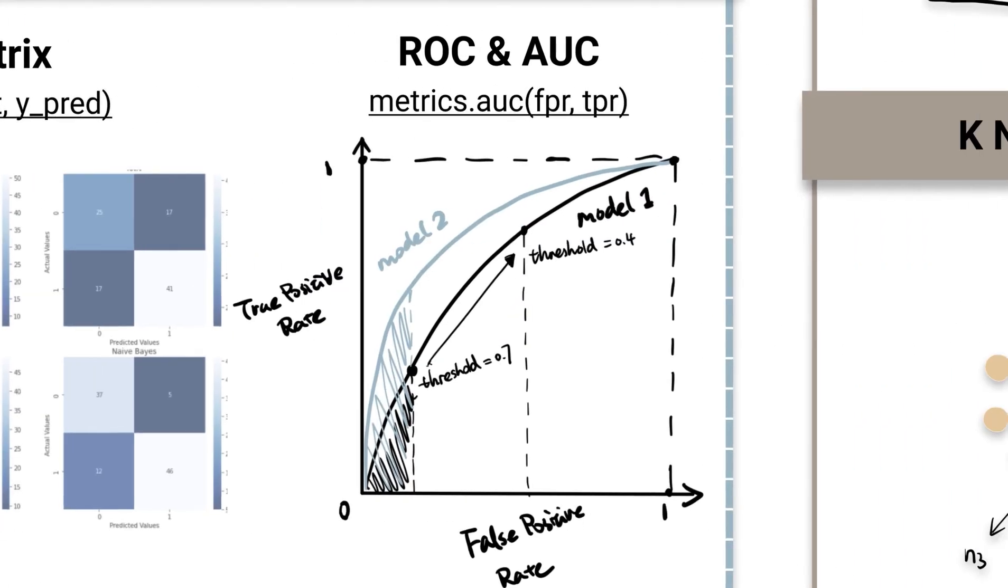ROC is the plot of true positive rate against false positive rate at various classification thresholds. AUC is the area under the ROC curve and higher AUC indicates better model performance.